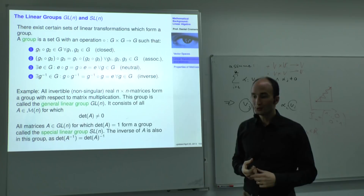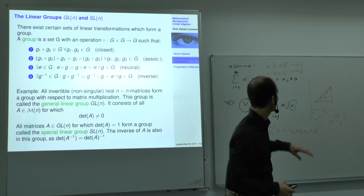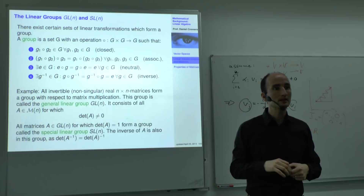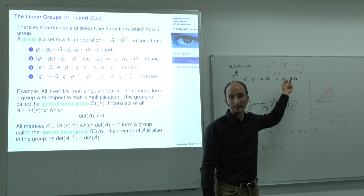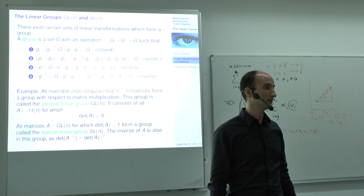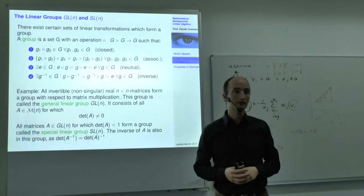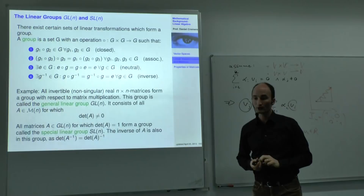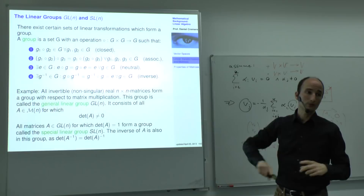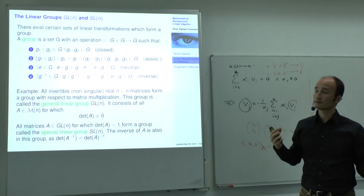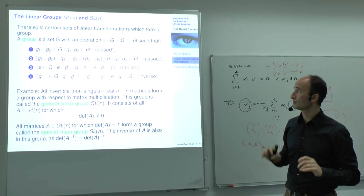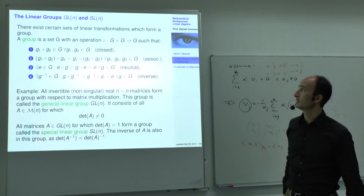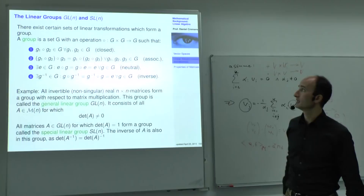Once you can multiply matrices, the first question is: can I compute inverses with respect to matrix multiplication? In general, you cannot always invert a matrix. But sometimes you can, and then you have group structures with a neutral element and an inverse. The neutral element in the set of matrices is the unit matrix. A group is a set G with some operation where: concatenating two elements remains in the group (closure); you have associativity; a neutral element that doesn't affect any element; and an inverse for every element.